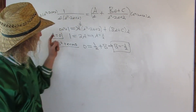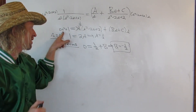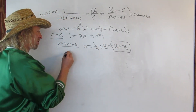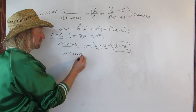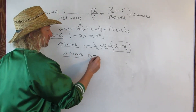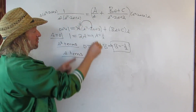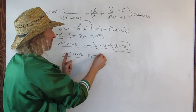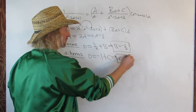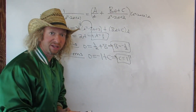Then we go down to the s terms. The coefficient of s on the left-hand side is zero. On the right-hand side: from A times (minus 2s) that's one half times negative two, so negative one; and then we have C from the Cs term. So negative one plus C equals zero, therefore C equals one. So we have all three constants: A equals one half, B equals negative one half, C equals one.